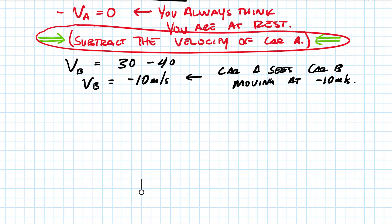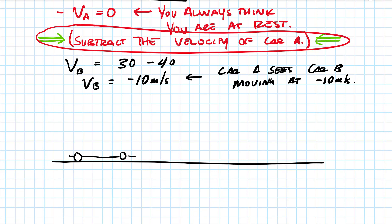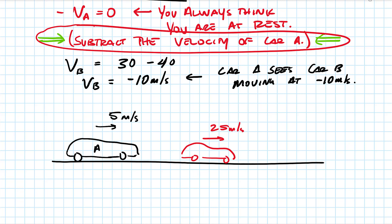Let's look at another example, a little more complicated. We're going to have car A going 5 meters per second, car B going a little faster at 25 meters per second, and on the other side of the road, car C moving at 10 meters per second in the opposite direction — so that's negative 10 meters per second because it's going backwards. So we've got car A, car B, and car C.